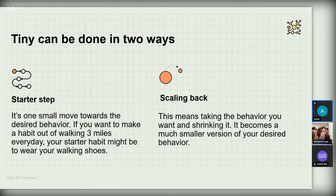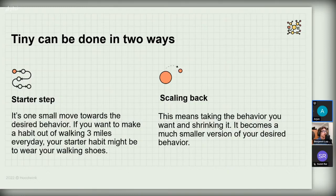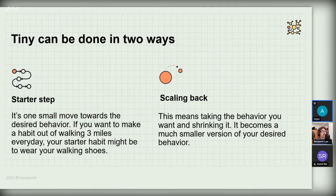There are two ways of making a behavior tiny. The first is a 'starter step' — one small move towards the desired behavior. If you want to make a habit of walking three miles every day, your starter habit might be just wearing your walking shoes. That's your tiny behavior and the only thing you need to do at the beginning. You don't have to walk; you don't have to go out; you just have to wear your shoes every day. The second method is 'scaling back' — using the behavior you want and shrinking it into a much smaller version. The author wanted to floss all his teeth every day but began with just one. Or if you want to read 10 pages, you just start with reading two lines every day.